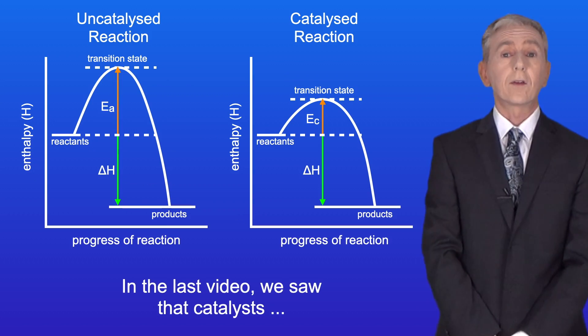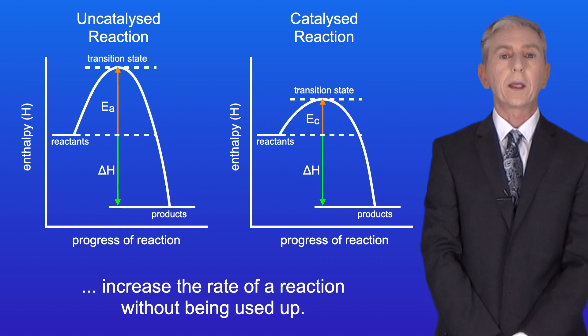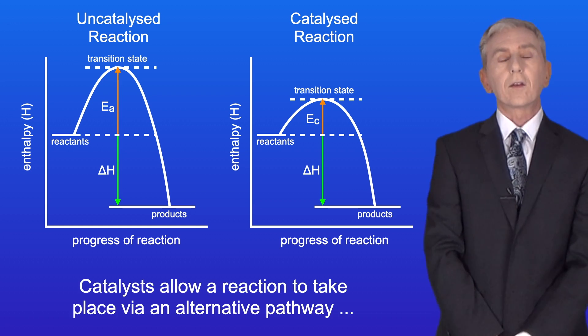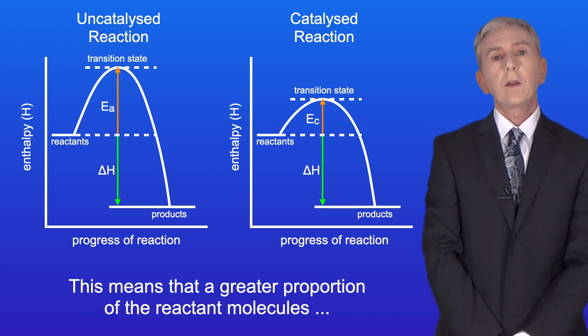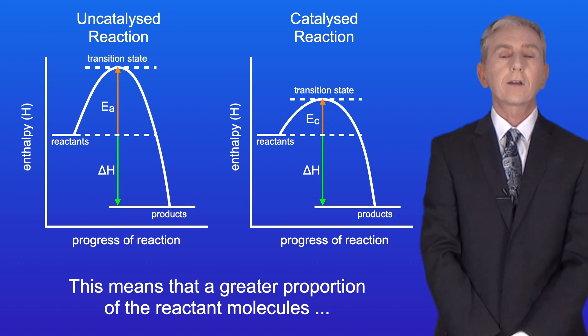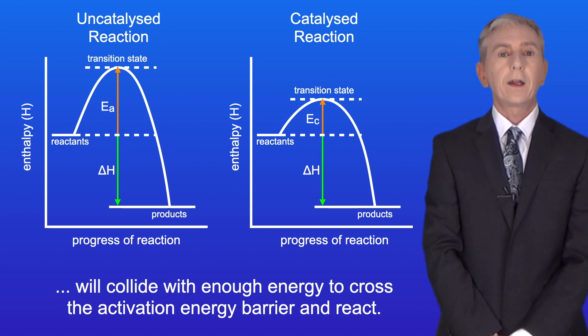In the last video we saw that catalysts increase the rate of a reaction without being used up. Catalysts allow a reaction to take place via an alternative pathway with a lower activation energy than the uncatalyzed reaction. This means that a greater proportion of the reactant molecules will collide with enough energy to cross the activation energy barrier and react.